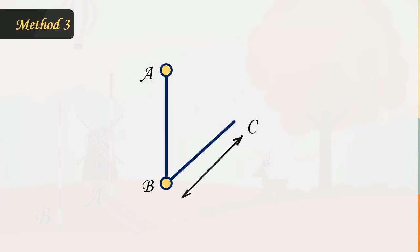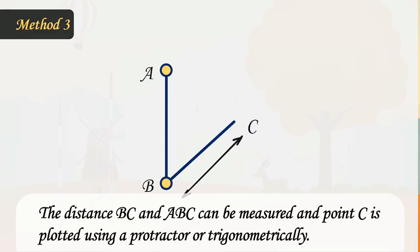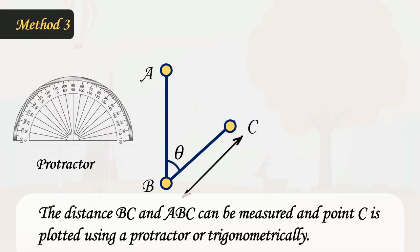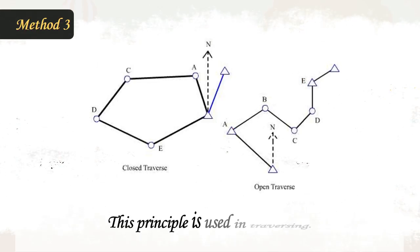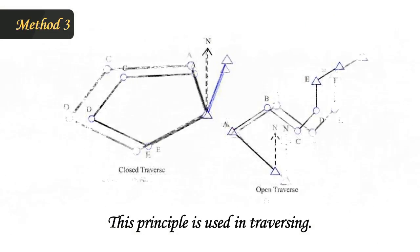Method 3: The distance BC and angle ABC are measured and point C is plotted using a protractor or trigonometrically. This principle is used in traversing.